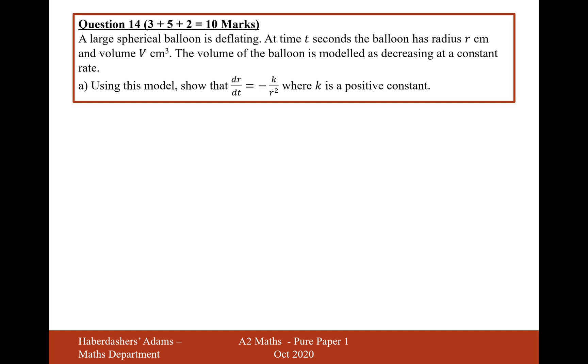Using this model, show that dr/dt equals minus k over r squared. Okay, so a large spherical balloon. Now, what I know about spherical objects is that they're equal to 4π r cubed over 3. So when we differentiate it, dV/dr, we're going to get 4π r squared. That might be potentially helpful.